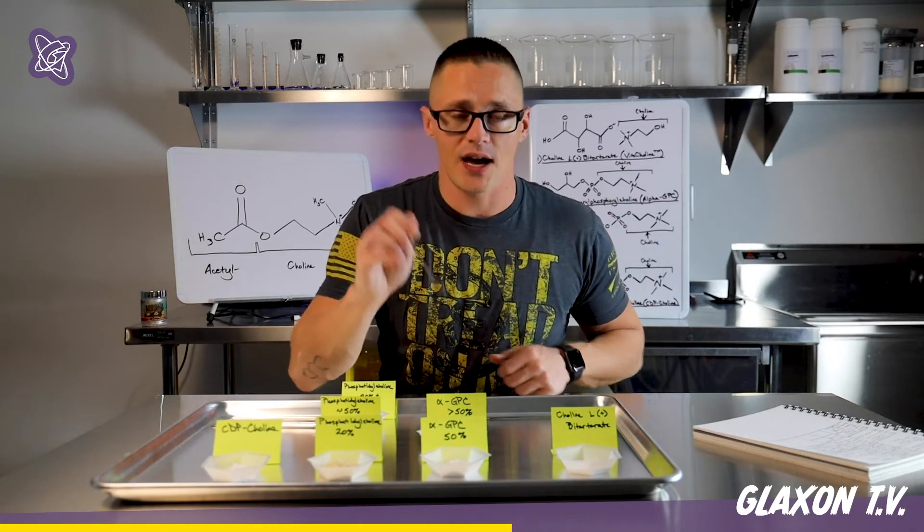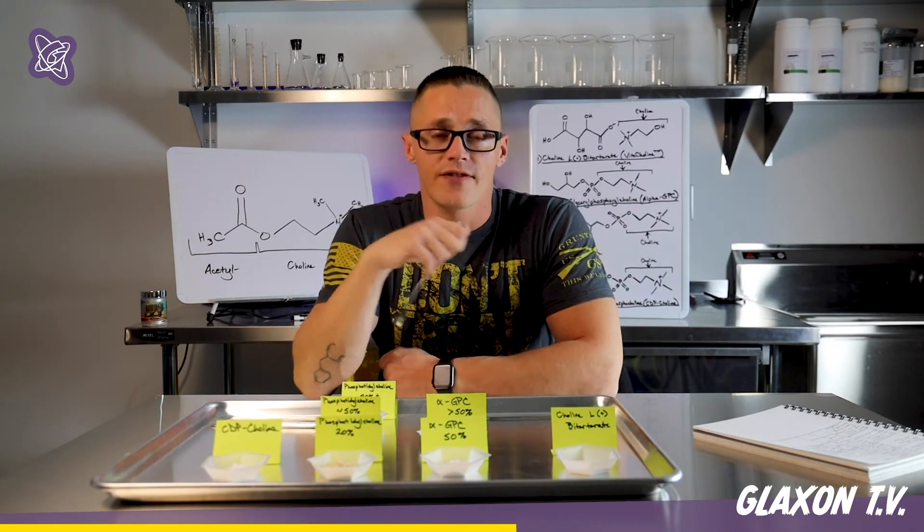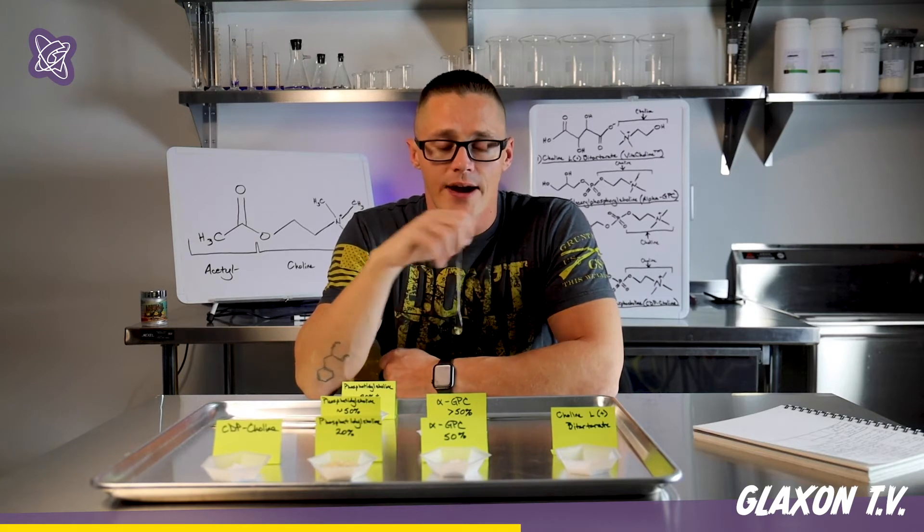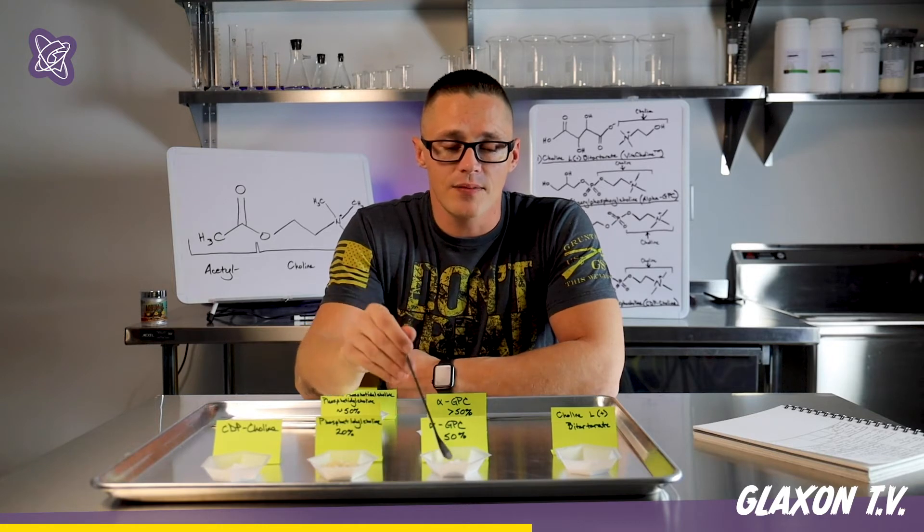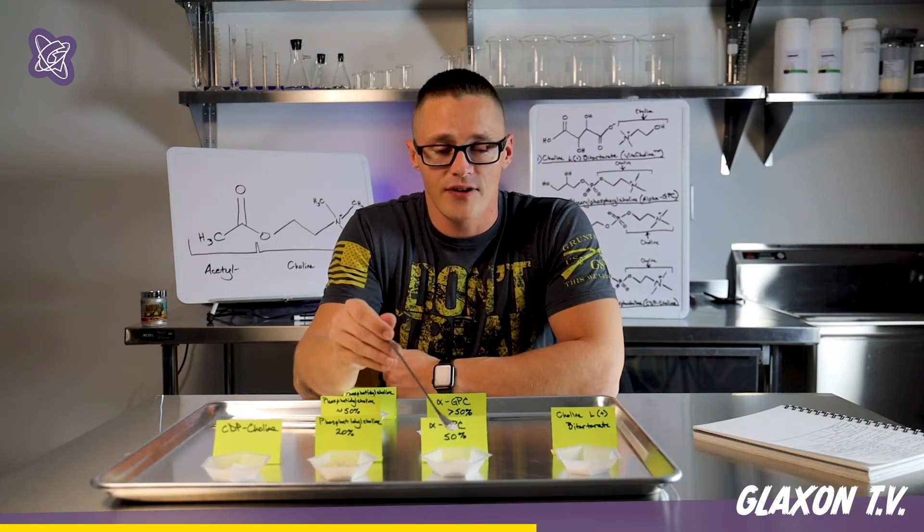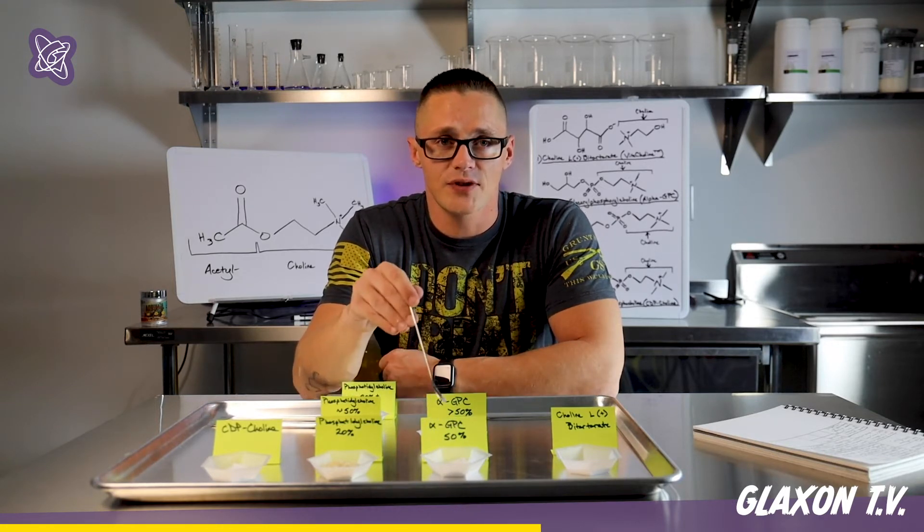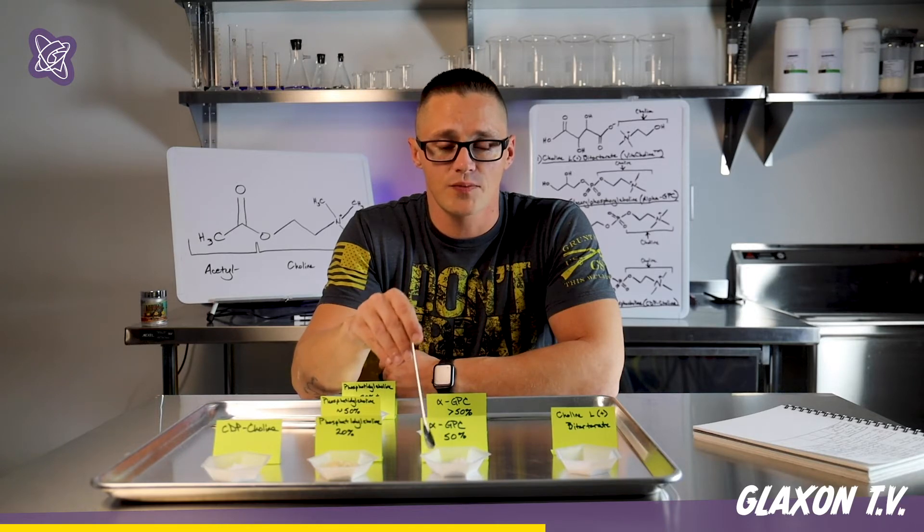Next is alpha-GPC. There are two different kinds of alpha-GPC on the market right now. If you get alpha-GPC in any type of pre-workout or capsule product, it's probably going to be this kind of stuff right here. This is very powdery and fine. This is the 50% alpha-GPC you'll find in most powder formulations.